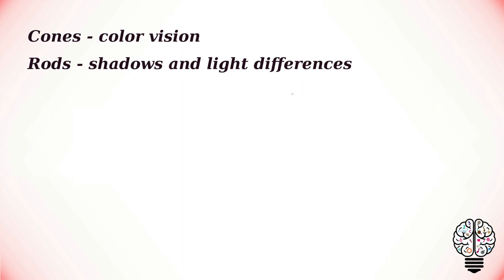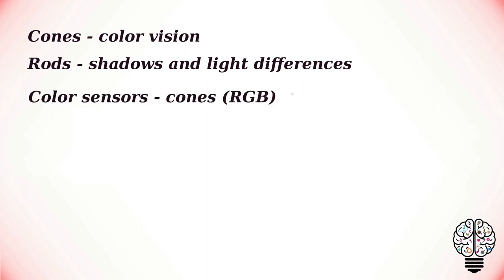Generally speaking, cones are for color vision and rods are for shadows and light differences. The front of your eye has many more cones than rods while the sides have more rods than cones. For this reason, your peripheral vision is sharper than your direct vision in the darkness, but your peripheral vision is also in black and white. Color sensors are found within cones, which respond to relatively broad color bands in the three basic regions of red, green and blue. Any colors in between these three are perceived as different linear combinations of RGB.